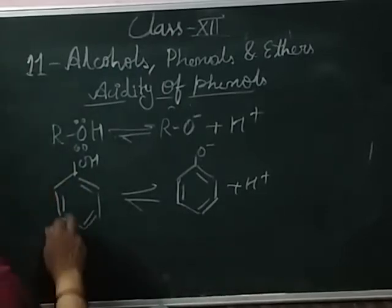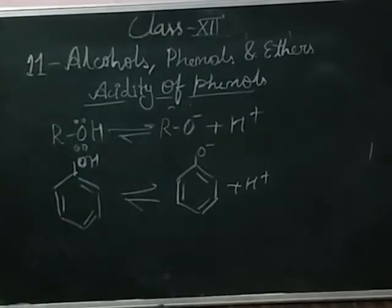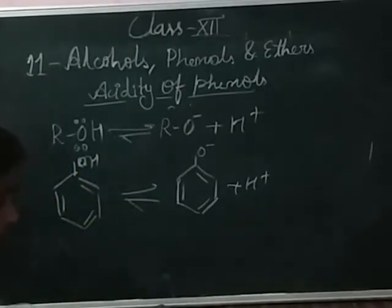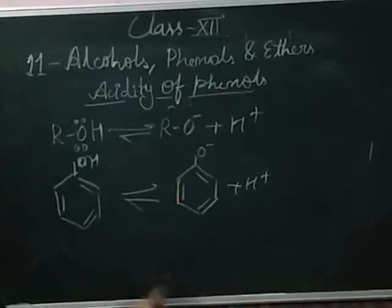The electron density decreases on the oxygen. If the electron density decreases on oxygen, then the polarity of the O-H bond increases. The increasing polarity leads to increasing ionization of phenol compared to that of alcohol. So this is the reason phenol is more acidic than alcohol and water.